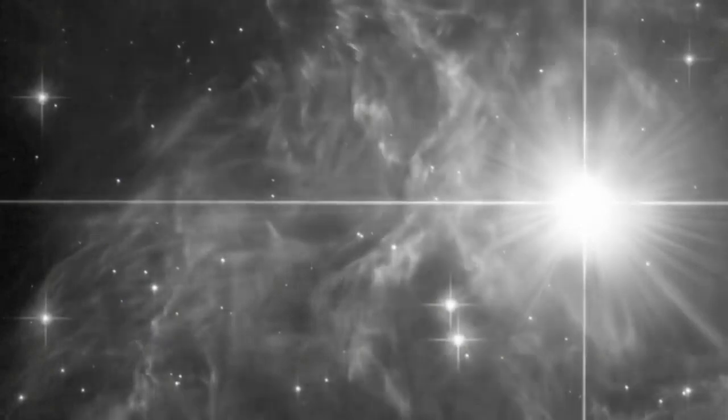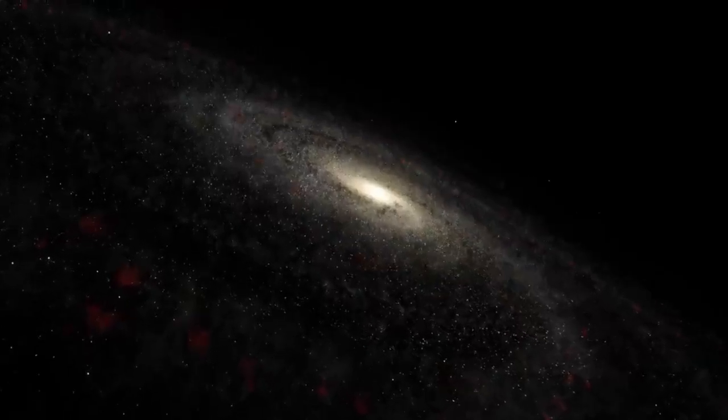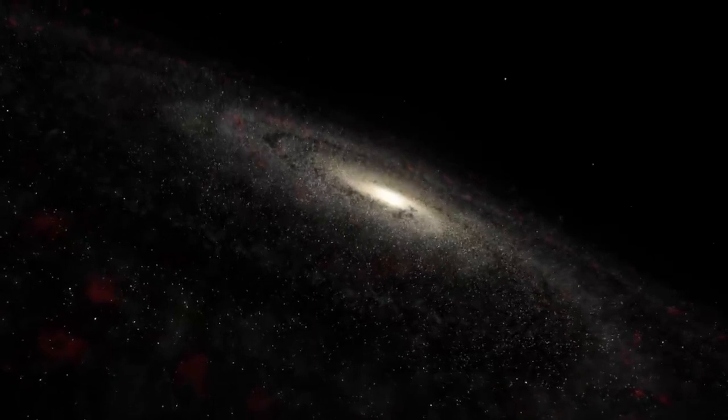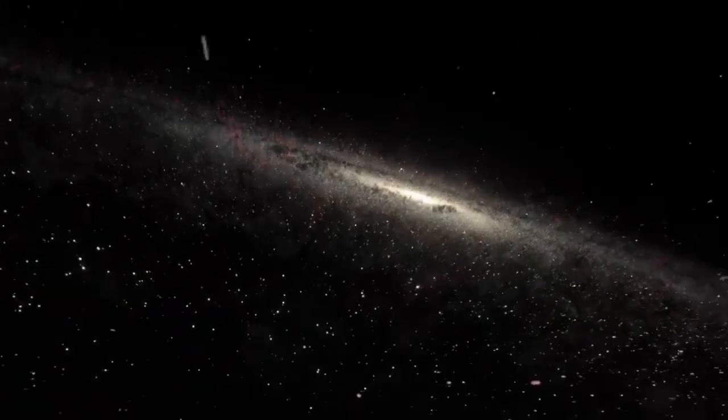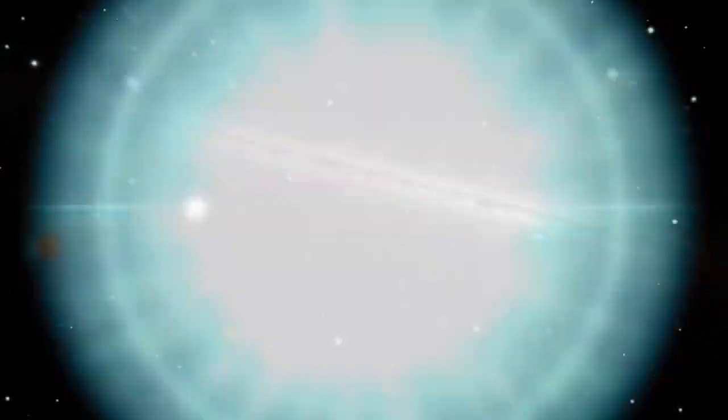To do this, astronomers use Hubble to measure the distances to a class of pulsating stars called Cepheid variables, which are used as milepost markers. Once the Cepheids are calibrated, astronomers move beyond our Milky Way to nearby galaxies for other reliable yardsticks.